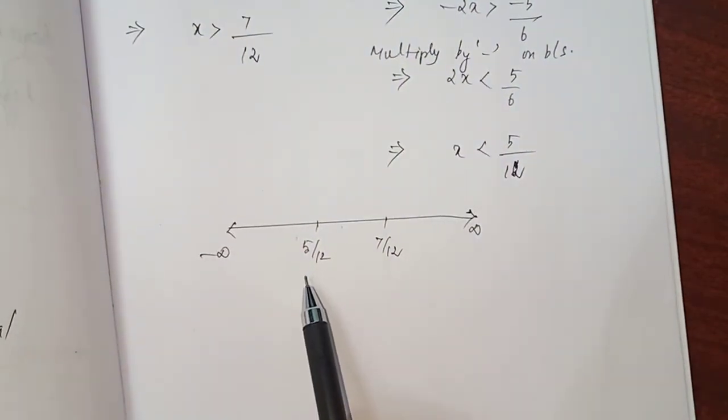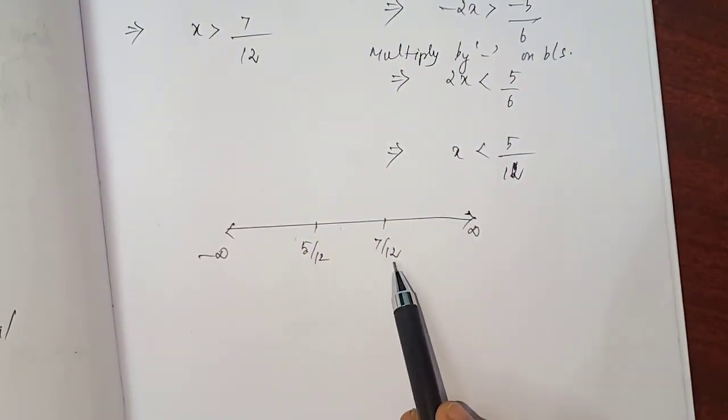Because 5 by 12 is lesser than 7 by 12. In comparing these two, this is smaller one, this is greater one.